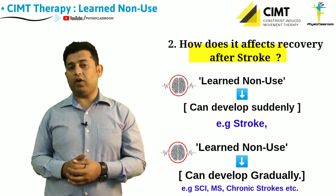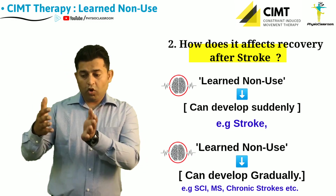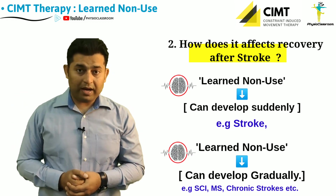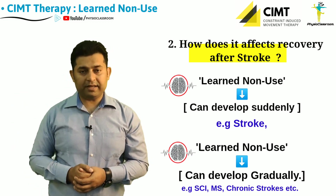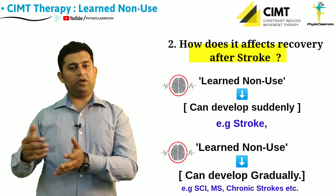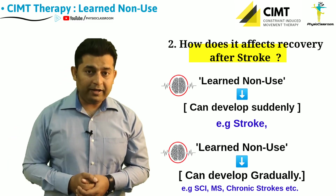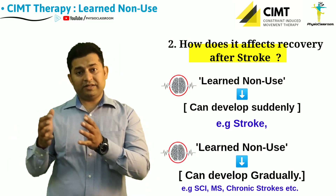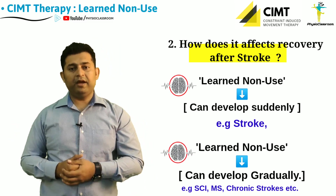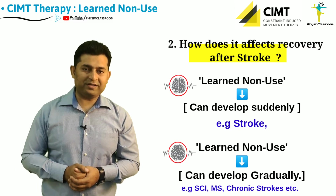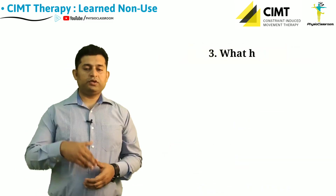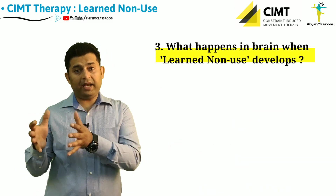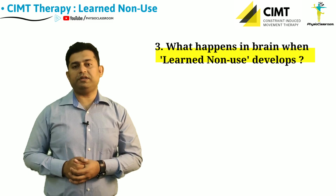Gradual development of learned non-use occurs in conditions like multiple sclerosis, incomplete spinal cord injuries, cerebral palsy, and chronic strokes. So now let's discuss what actually happens in the brain of a stroke patient after the development of learned non-use.